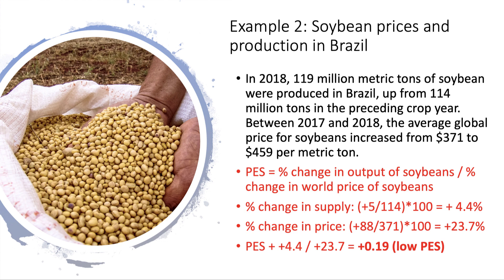The change in price is from $371 to $459 — that's a change of $88. Divide by the original $371, multiply by 100, giving a percentage price increase of plus 23.7 percent. So there's been a 4.4 percent rise in output on the back of a 23.7 percent change in price, giving a coefficient of elasticity of supply of plus 0.19 — that's a low figure.